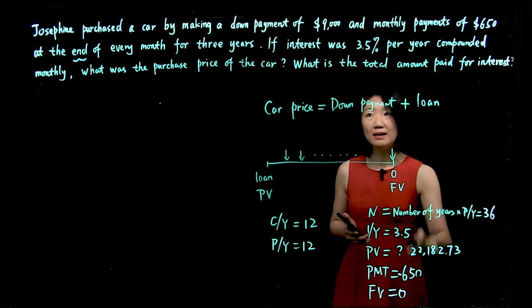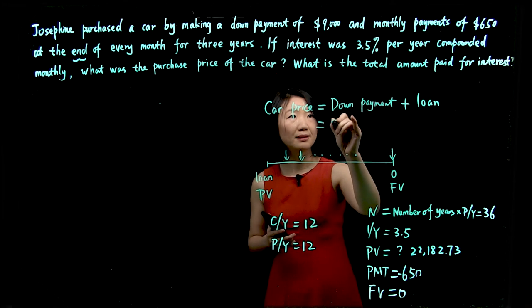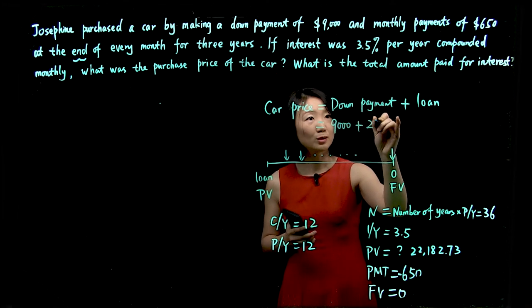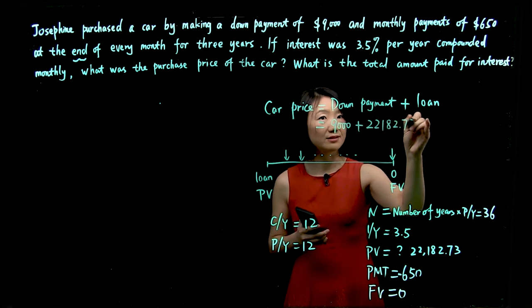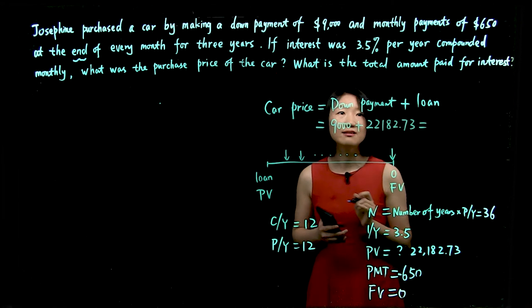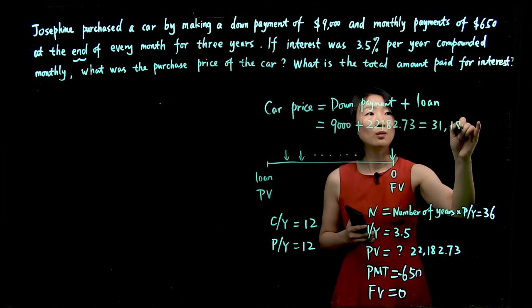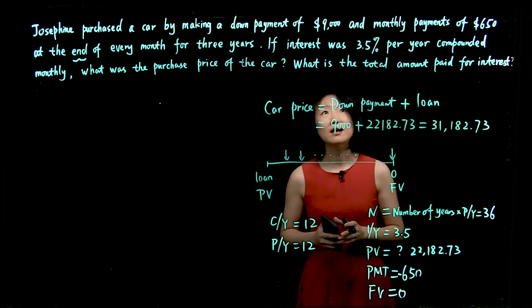So now we have the loan amount. Let's calculate the car price. It's down payment, $9,000, plus the loan, $22,182.73. So the answer would be $31,182.73. That's the car price.